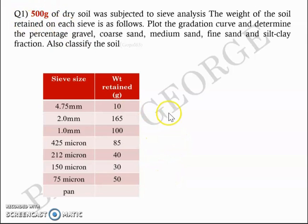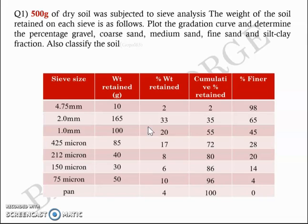Based on the weight retained on each sieve and the pan, you can calculate the percentage weight retained because you already know the total weight is 500 grams. And from the percentage weight retained, you'll get the cumulative percentage weight retained, which will in turn help you to find the percentage finer. You have the percentage weight retained, cumulative percentage weight retained, and percentage finer.